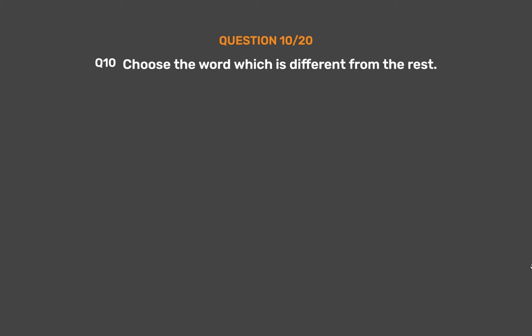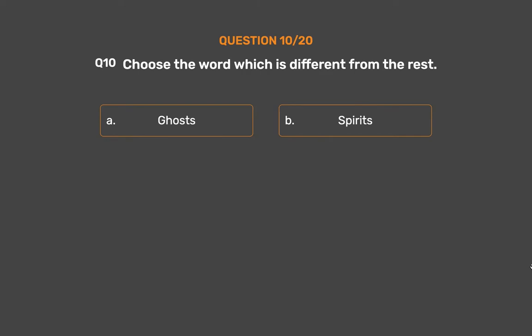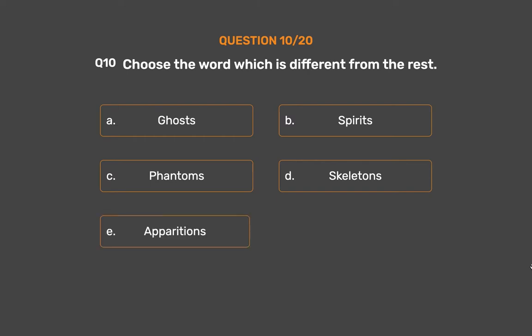Question number 10. Choose the word which is different from the rest. Option A: Ghosts. Option B: Spirits. Option C: Phantoms. Option D: Skeletons. Option E: Apparitions.